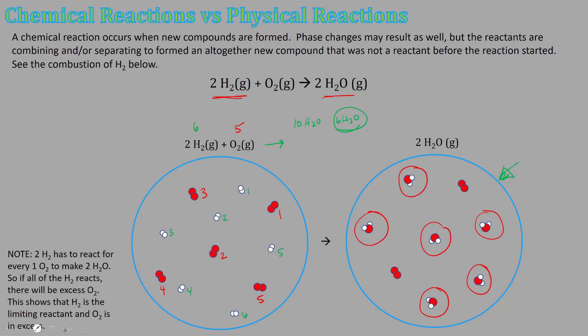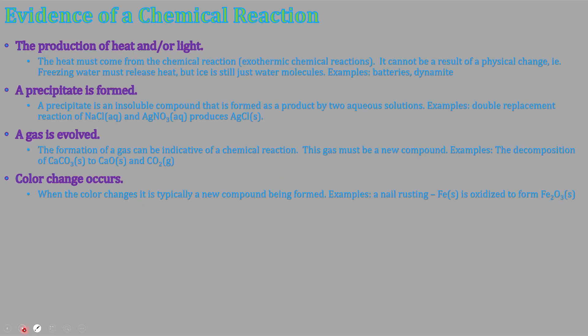Next, evidence of a chemical reaction - this should be old news to you. The production of heat and/or light. Something being caught on fire is a chemical reaction - the fire, the heat is a result of that reaction. Those are exothermic chemical reactions.